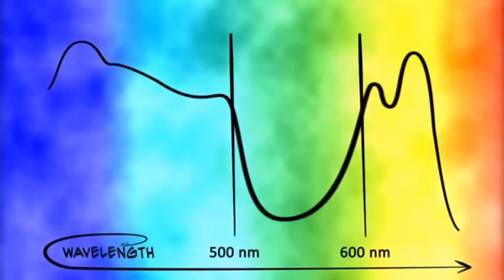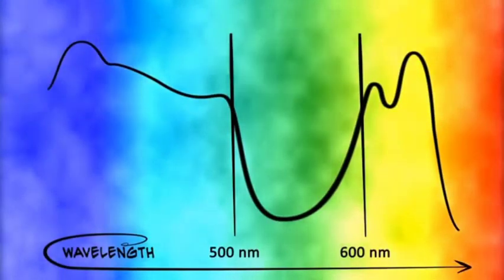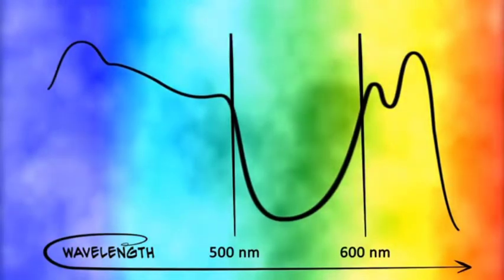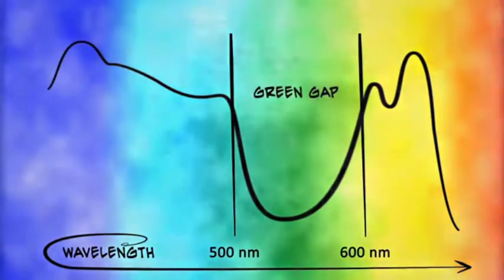This is the reason why plants are green, as light with a wavelength of about 500 to 600 nm isn't absorbed but reflected. This is called the green gap.